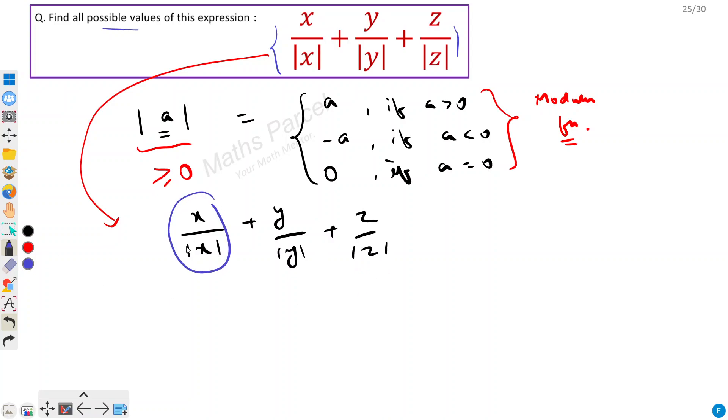Now let's look at this first, so x upon modulus x. Now what values can it hold? Let's say x is greater than 0, so our modulus will open like this only, so x upon x that would be 1. Let's say x is less than 0, so that would be x upon minus x, that would be minus 1.